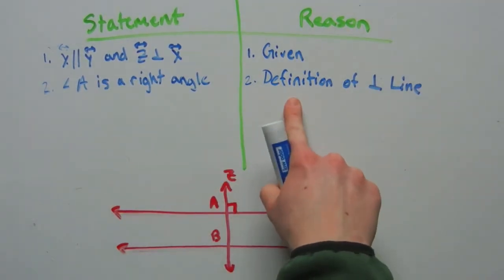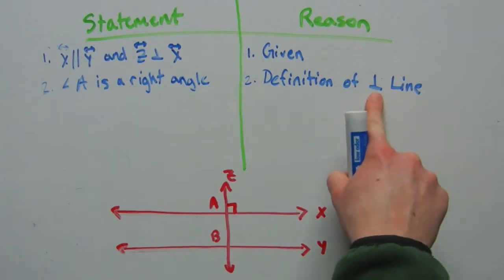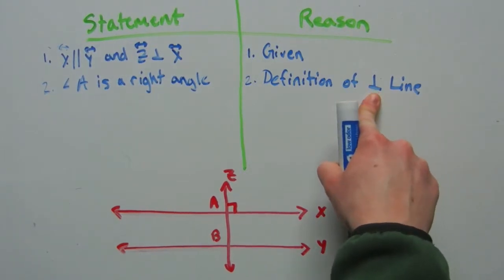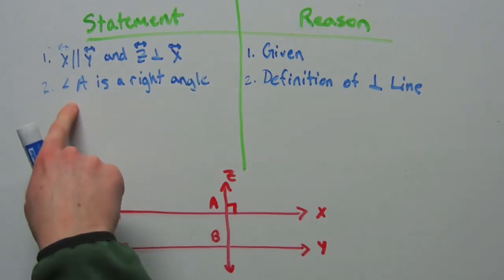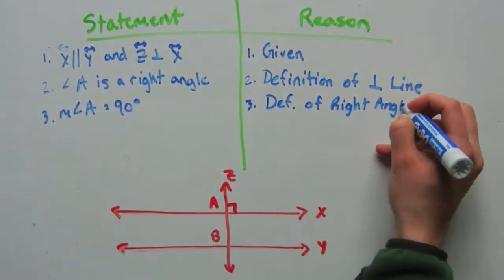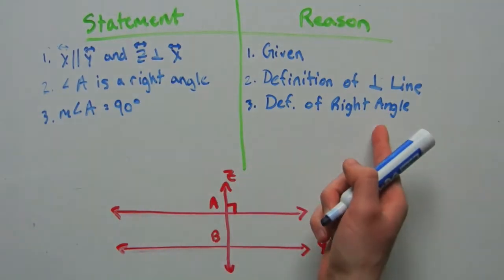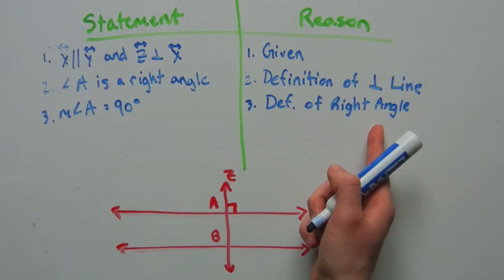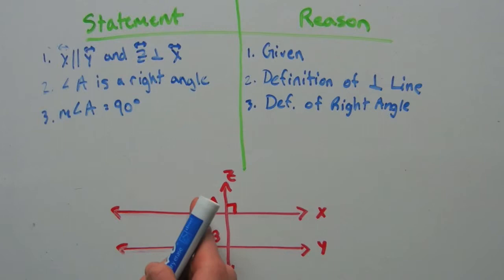We know since Z is perpendicular to X, then angle A is a right angle — that's because of the definition of a perpendicular line. Remember, this is the symbol for perpendicular. And if A is a right angle, we know that the measure of angle A is 90 degrees, because of the definition of a right angle. Now we're going to use the corresponding angles postulate to say that angle A is congruent to angle B.